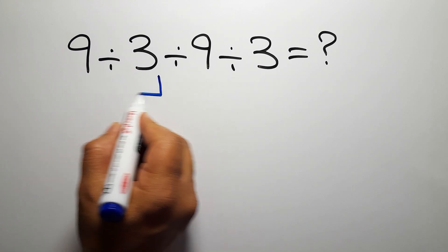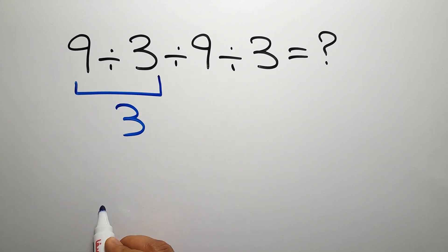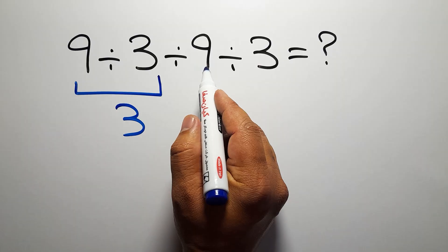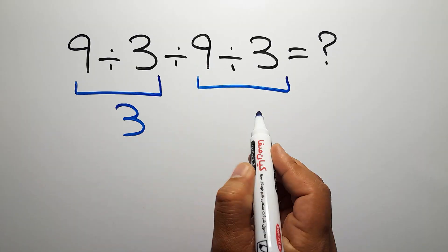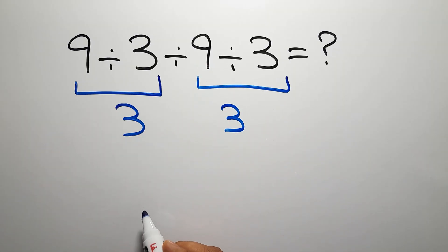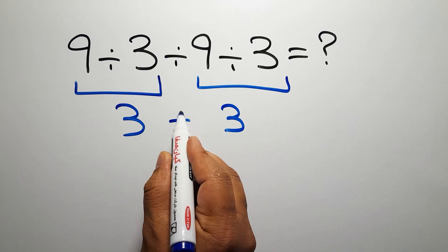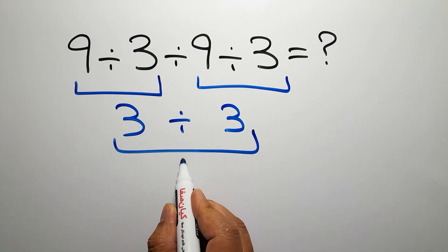9 divided by 3 gives us 3. And again, we have here 9 divided by 3, which equals 3. So 3 divided by 3, which equals 1.